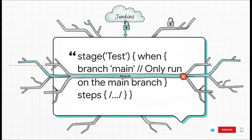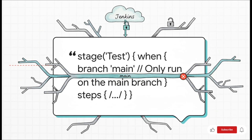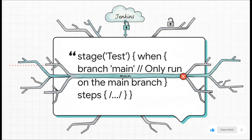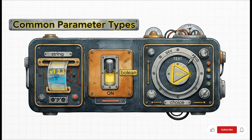Let's look at a really practical example with the 'when' directive. Inside our Test stage we've added a when block that says 'branch main' — it's that simple. Now this entire stage will only run when we're building the main branch; any other branch it just gets skipped. This is an absolute game changer for controlling your workflow, like making sure you never accidentally deploy a feature branch to production.